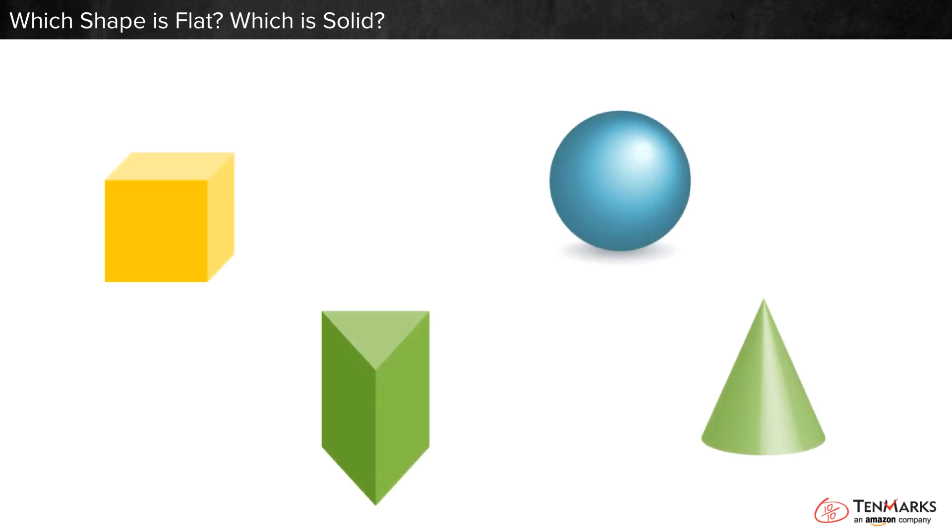It can be tricky to draw solid shapes on paper or on a screen. When you draw a solid shape, it might show more than one face. Or it might look like light is shining on it, or have a shadow. That's how you know that it is solid.